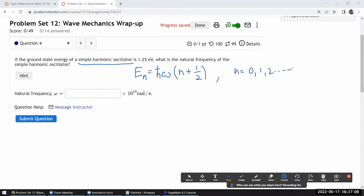So when it says that the ground state energy of this is this, what it's saying is that this is my E naught energy at n equals zero. So my E naught, which is h bar omega over two, is equal to 1.25 electron volts.